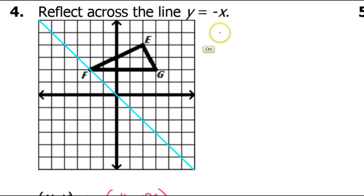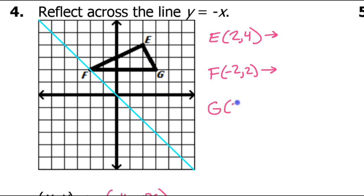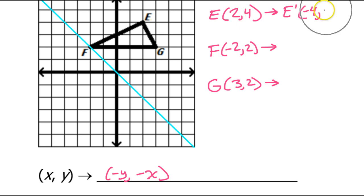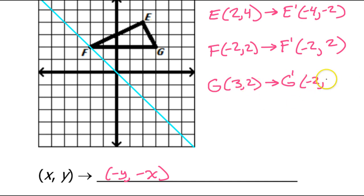Let's write down the coordinates of EFG. Point E is 2 comma 4, point F is negative 2 comma 2, and point G is 3 comma 2. We apply opposite of y and then opposite of x. So E prime: opposite of y is negative 4, opposite of x is negative 2. F prime: opposite of y is negative 2, opposite of x is positive 2. G prime: opposite of y is negative 2, opposite of x is negative 3.